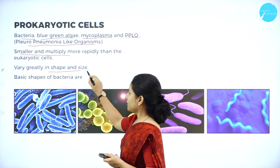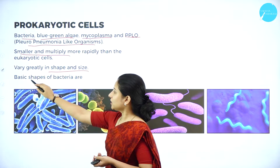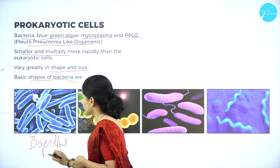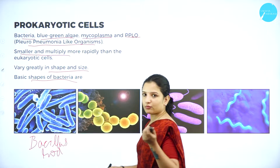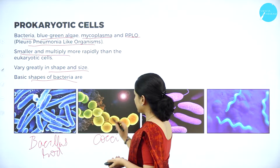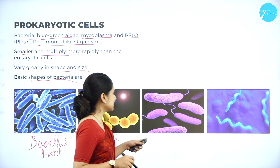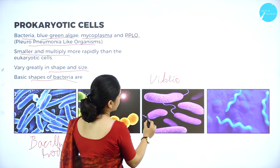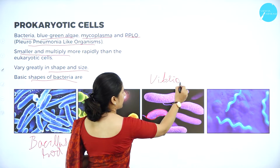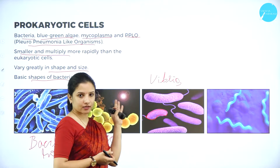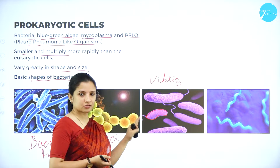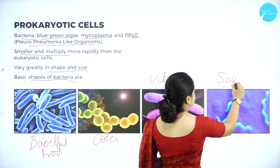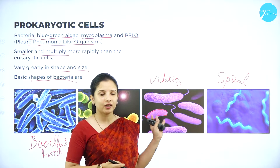Prokaryotes vary greatly in shape and size. The basic shapes of bacteria observed under the microscope are: bacillus, which is rod-like; coccus or cocci, which are oval or circular; vibrio, which are comma-shaped; and spiral-shaped bacteria. These are the four common shapes of bacteria.